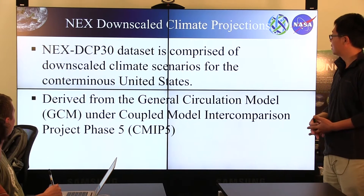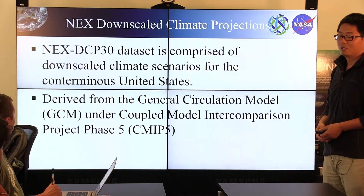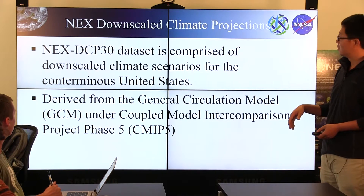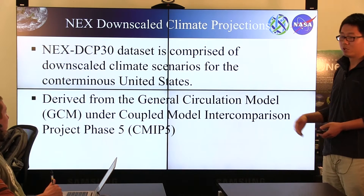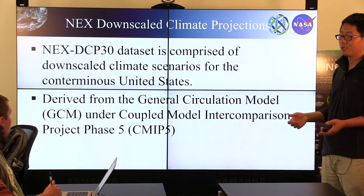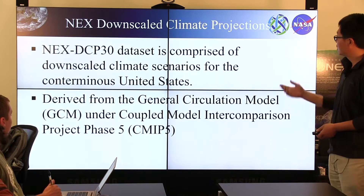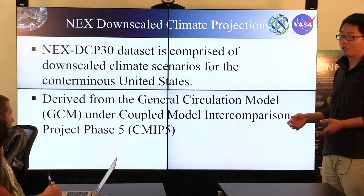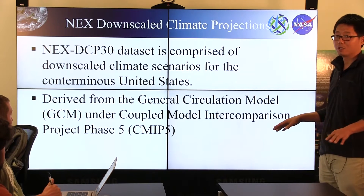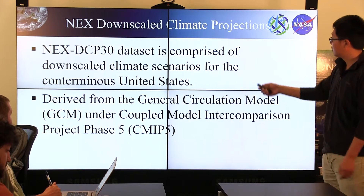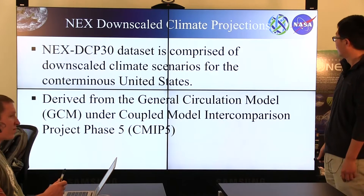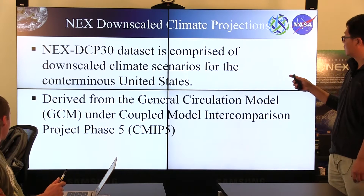So what is the NEX DTP30? The DTP30 dataset is produced by the NASA NEX team. It is a product from the National Climate Assessment Project. This dataset is so far the highest temporal resolution and spatial resolution dataset for climate studies. The DTP30 covers the continental United States. It is a downscaled climate dataset.